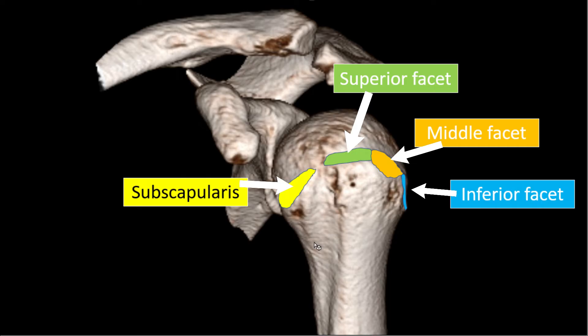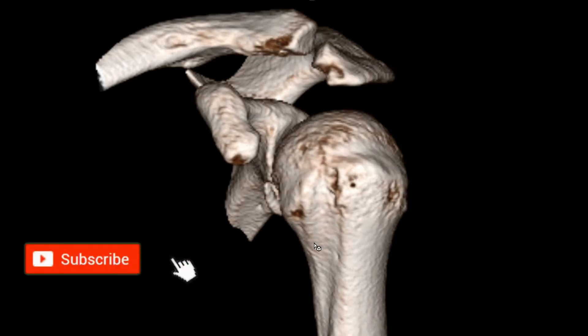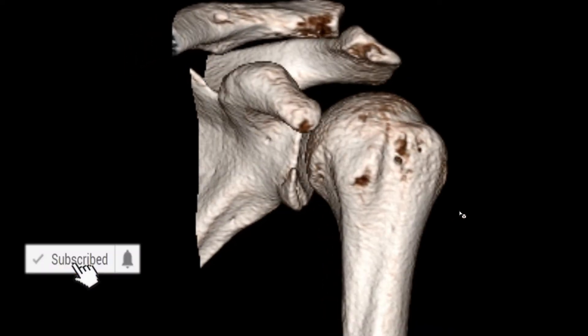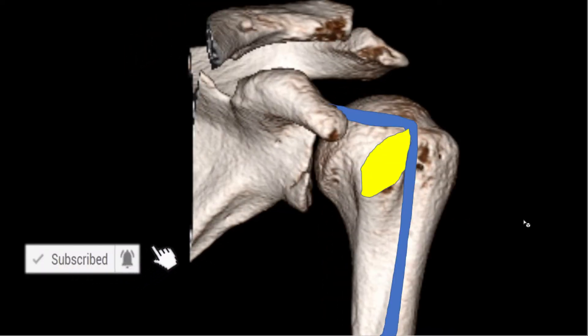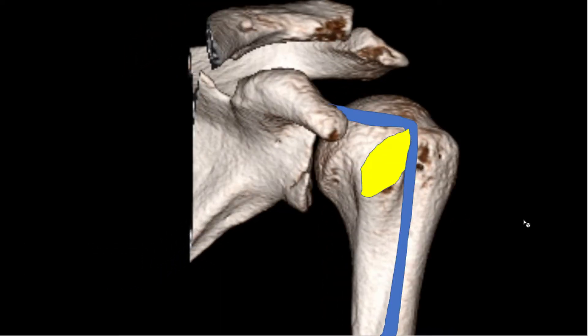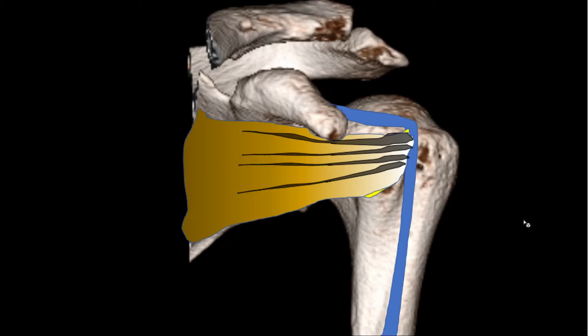Here you can see the different facets of the rotator cuff. The subscapularis tendon inserts onto the lesser tubercle, shown here in yellow. The subscapularis muscle or tendon basically comprises several tendon slips as shown here, and I will show you an example on a real MR image just in a second.